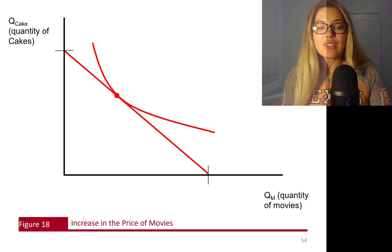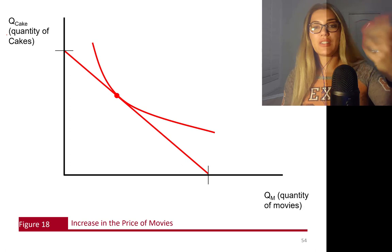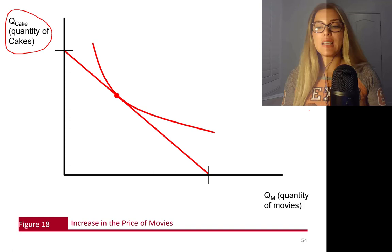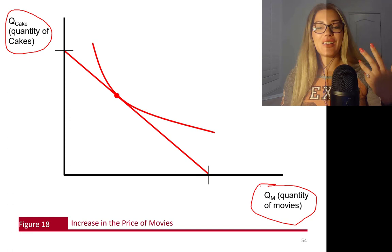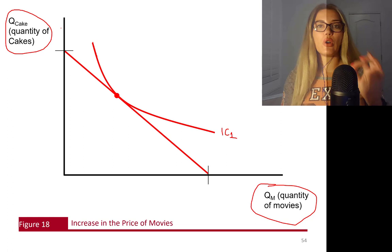Imagine a world where we are either eating cakes or consuming movies. So that's the quantity of cakes on the y-axis and quantity of movies on the x-axis — two goods we are consuming. This is an indifference curve — I'm going to call it IC1, indifference curve 1 — it shows the locus of all points that gives you the same level of utility or happiness satisfaction.